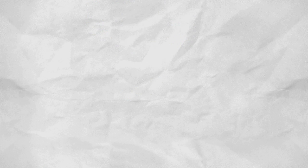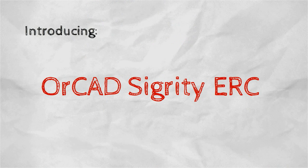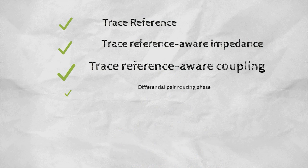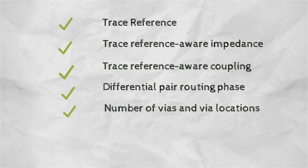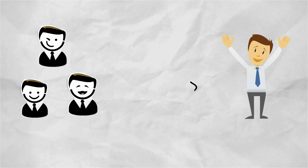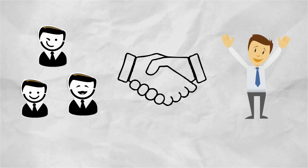Only using ORCAD's Sigrity ERC are you able to perform this level of electrical rule checking early in the design stage and create an efficient process, eliminating signal and power integrity chaos and providing a collaborative design environment between your PCB design team and signal integrity expert.